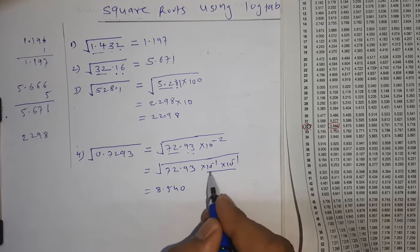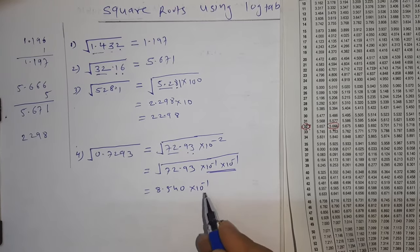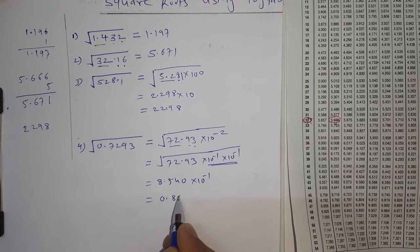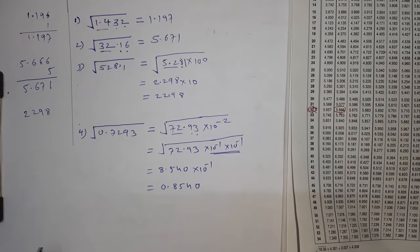Out of this two, you will take one out of the square root bracket. So 10 raise to minus 1, you can write this as 0.8540. Thank you students.